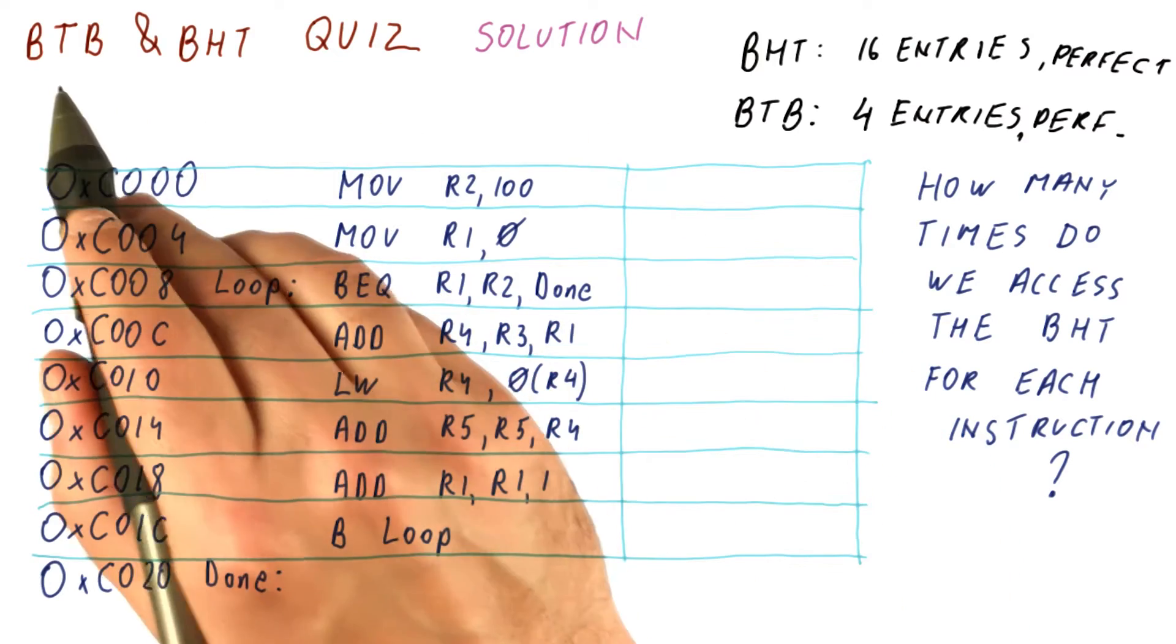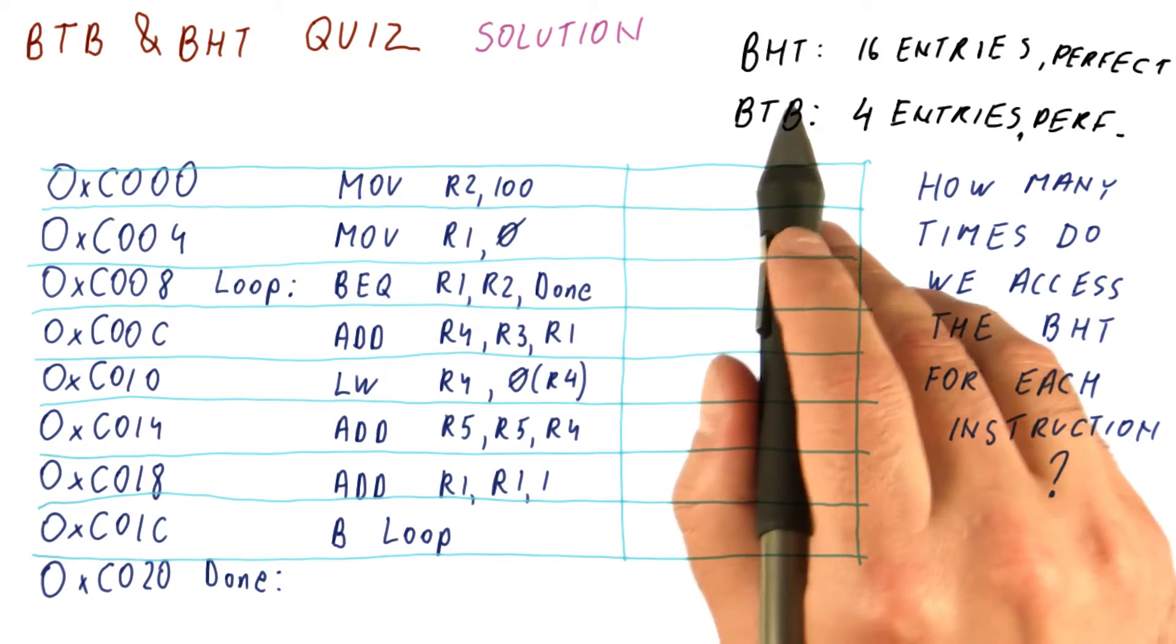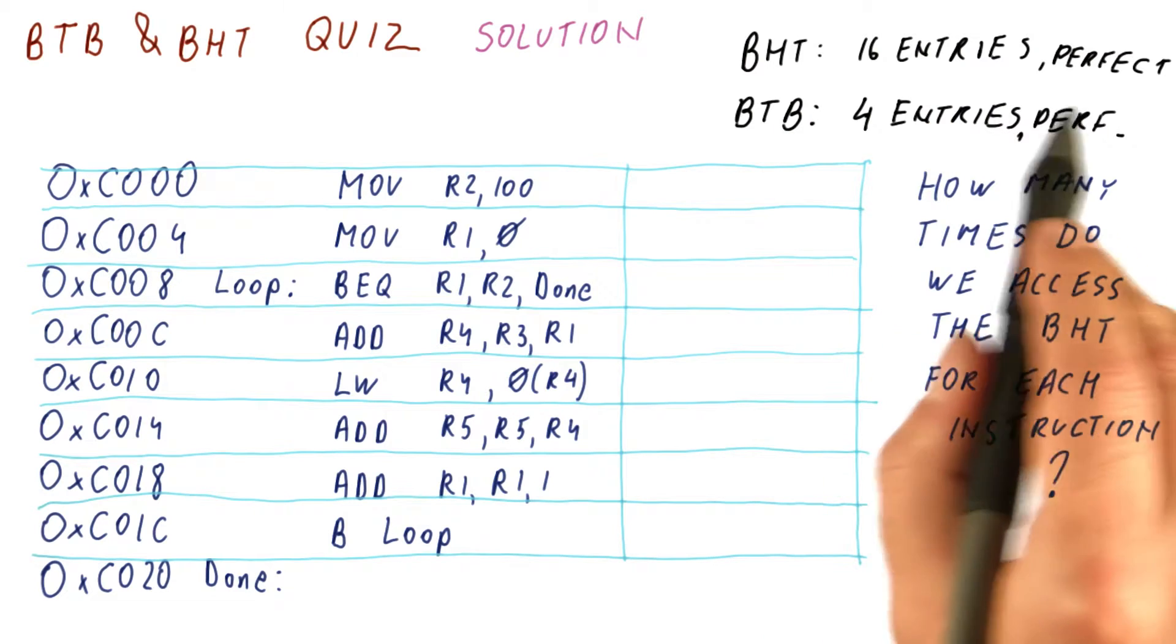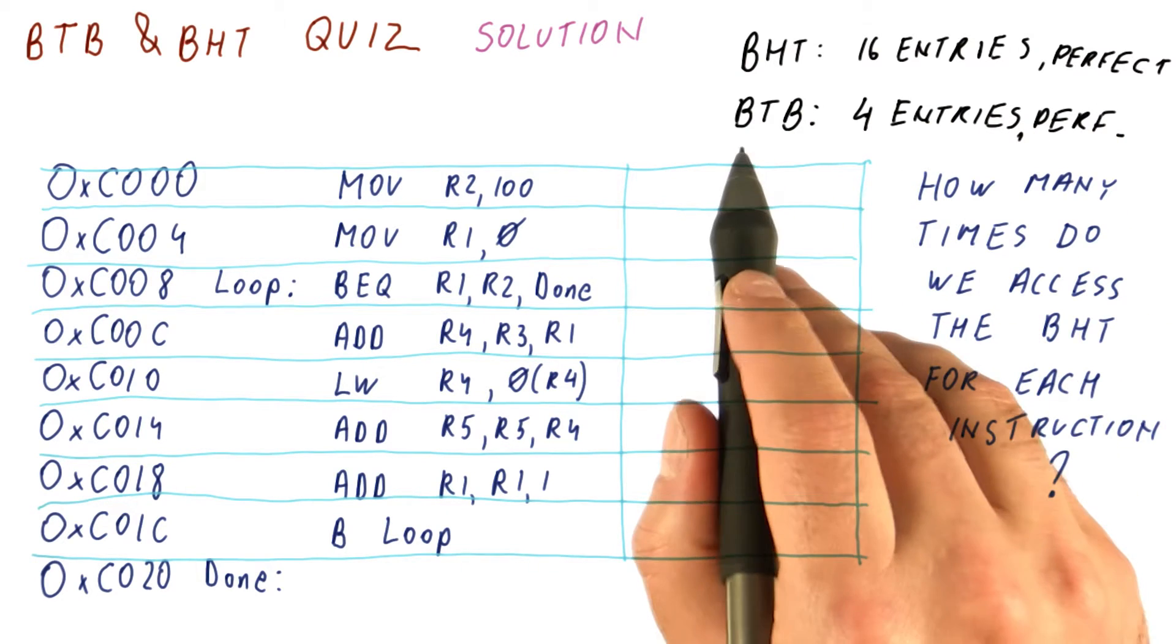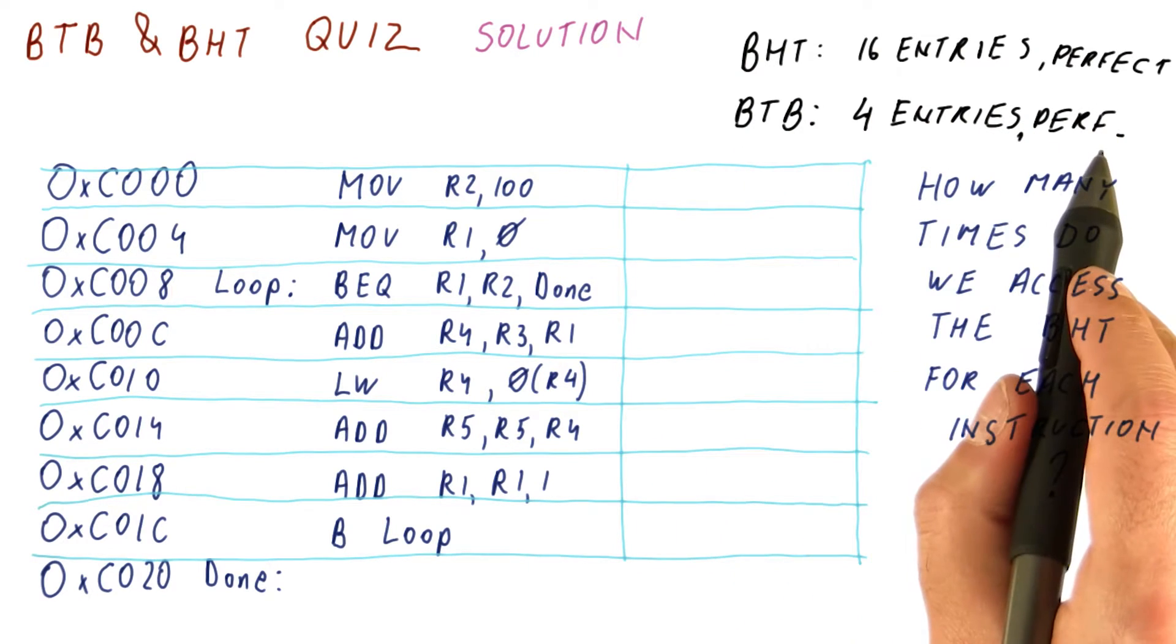So let's do the solution to our BTB and BHT quiz. We have a BHT with 16 entries which gives perfect predictions. We have a BTB with four entries that gives us perfect predictions.